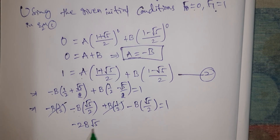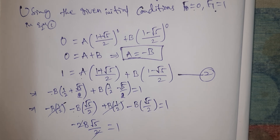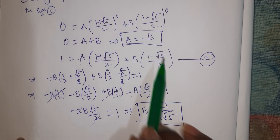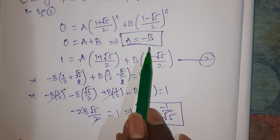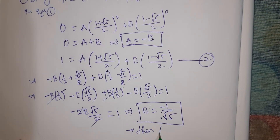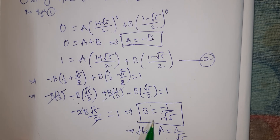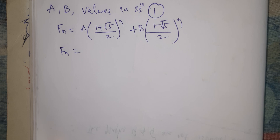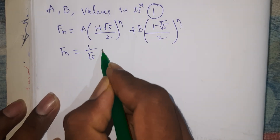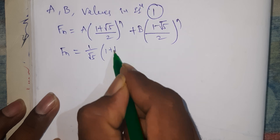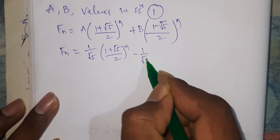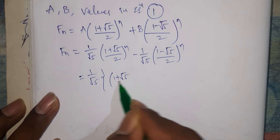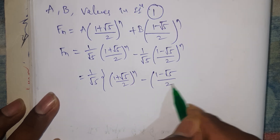Substituting into f(1) = 1: A·(1+√5)/2 + B·(1-√5)/2 = 1. Since B = -A, the terms simplify and we get -2B·(√5/2) = 1, so B = -1/√5 and therefore A = 1/√5. Substituting back into equation 1, f(n) = (1/√5)·((1+√5)/2)^n - (1/√5)·((1-√5)/2)^n, which equals (1/√5)[((1+√5)/2)^n - ((1-√5)/2)^n].